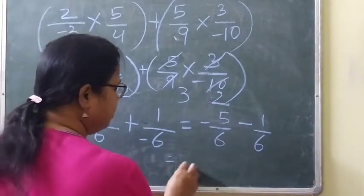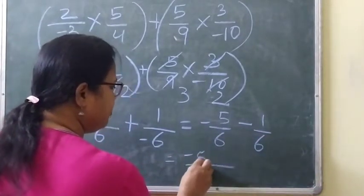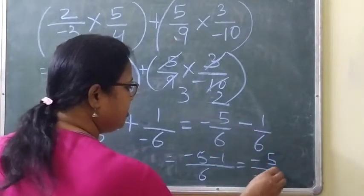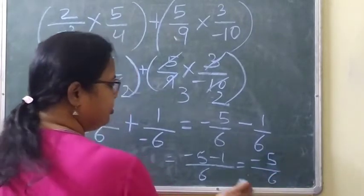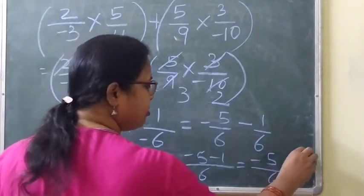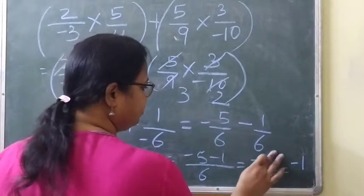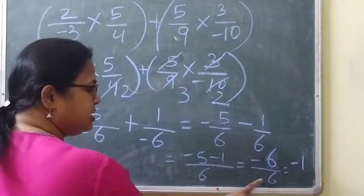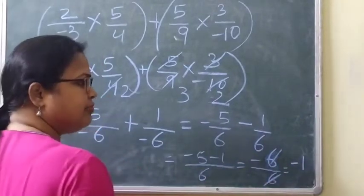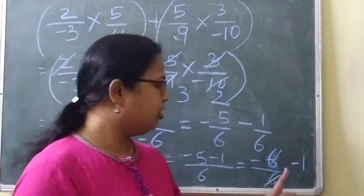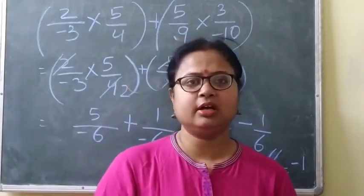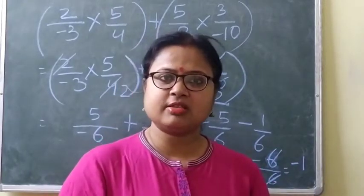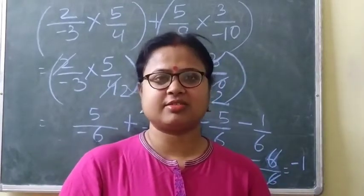So we have minus 5 by 6 minus 1 by 6. Since the denominators are the same, 6 and 6 cancel and we add the numerators: minus 5 minus 1 equals minus 6. So minus 6 by 6 gives minus 1. So the answer is minus 1. I am sure you must have got the same answer.